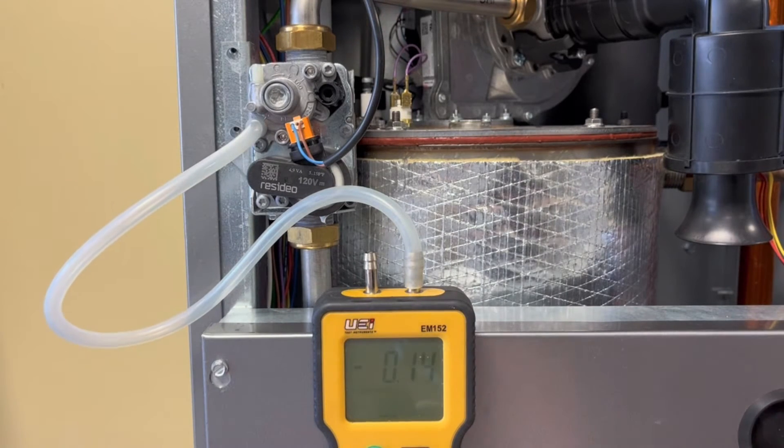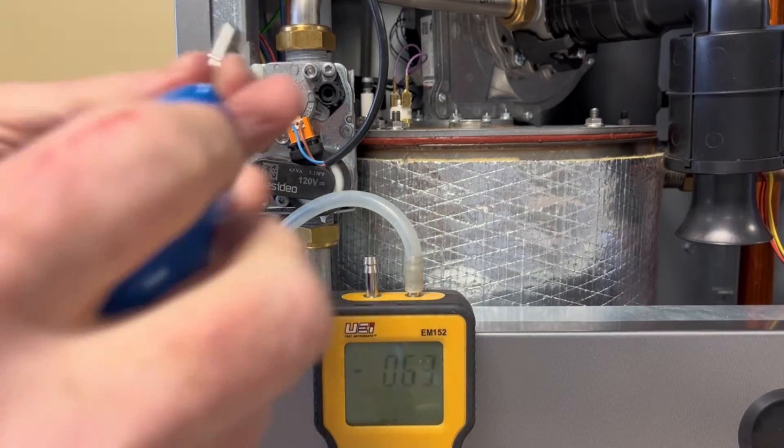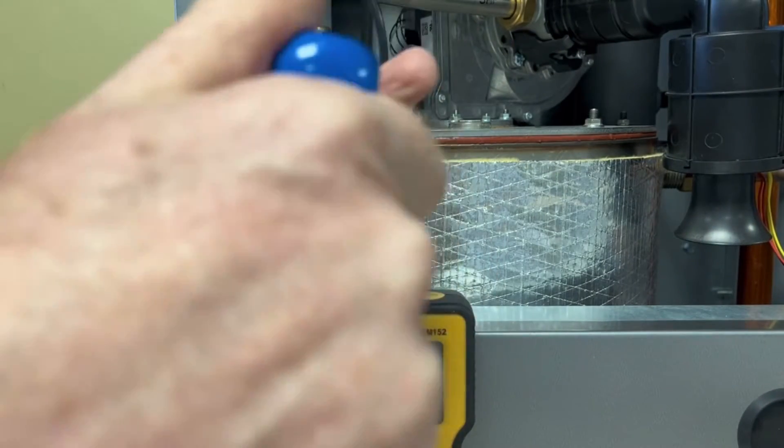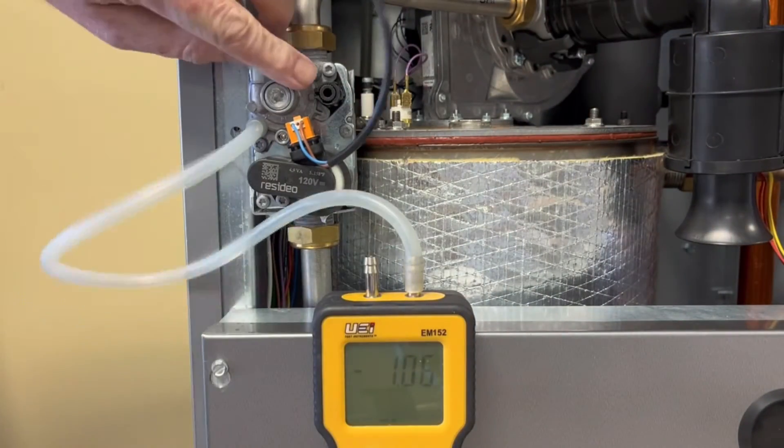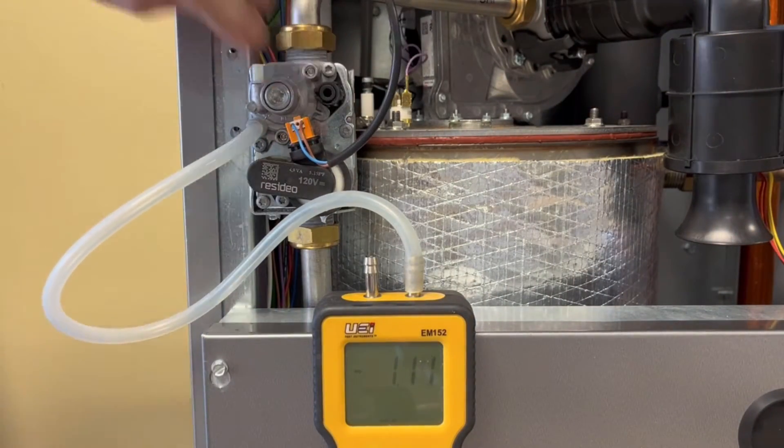Once the manometer is connected, adjust the throttle screw until it is fully open. To do this, turn clockwise until the screw comes out flush with the plastic housing. Once the screw is flush, the valve is fully open.